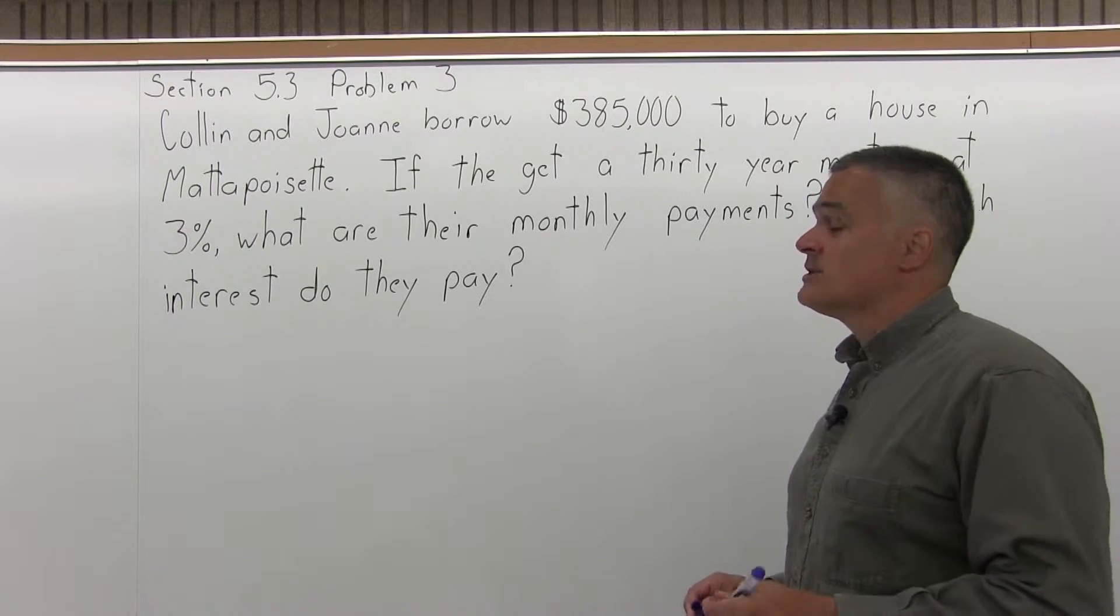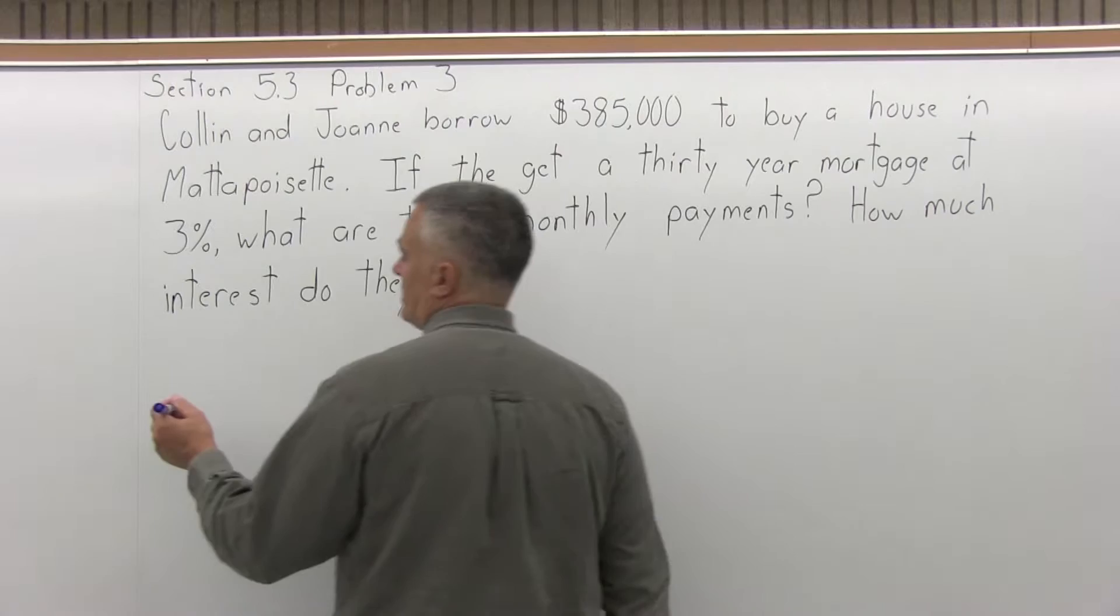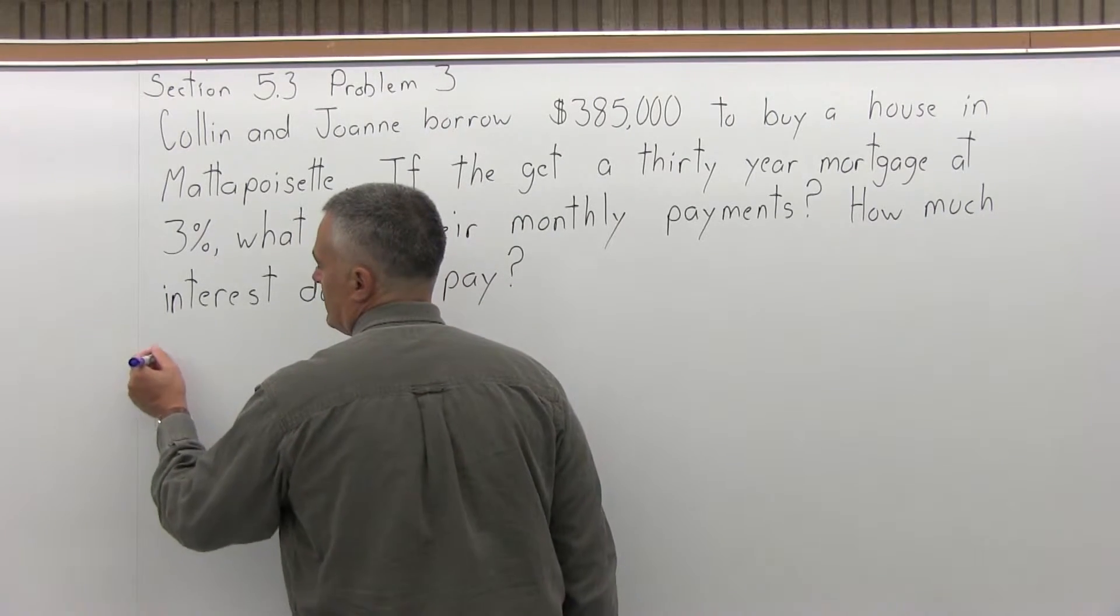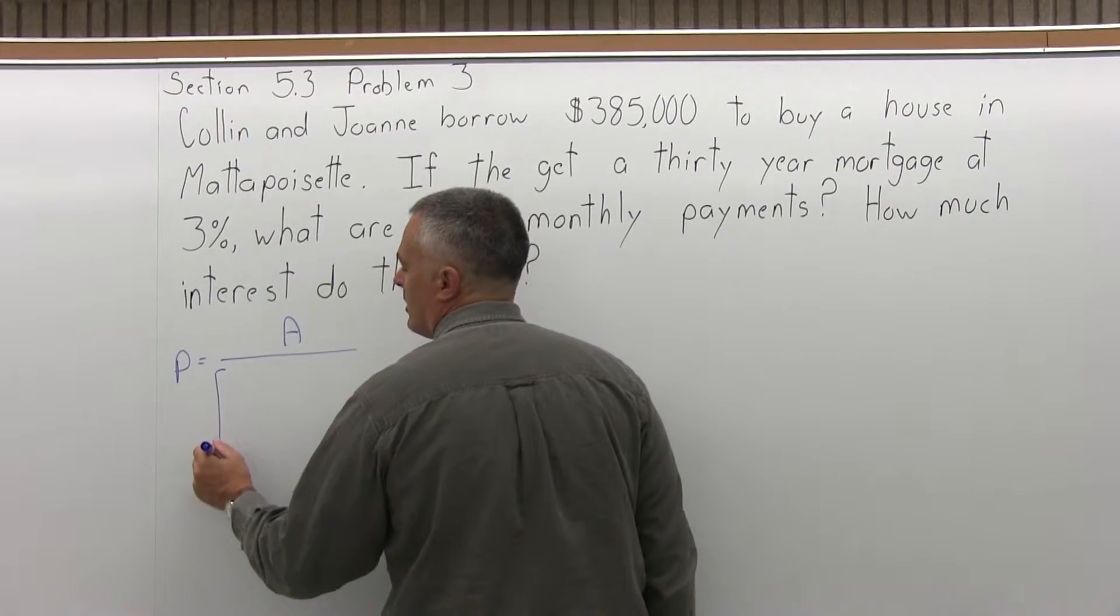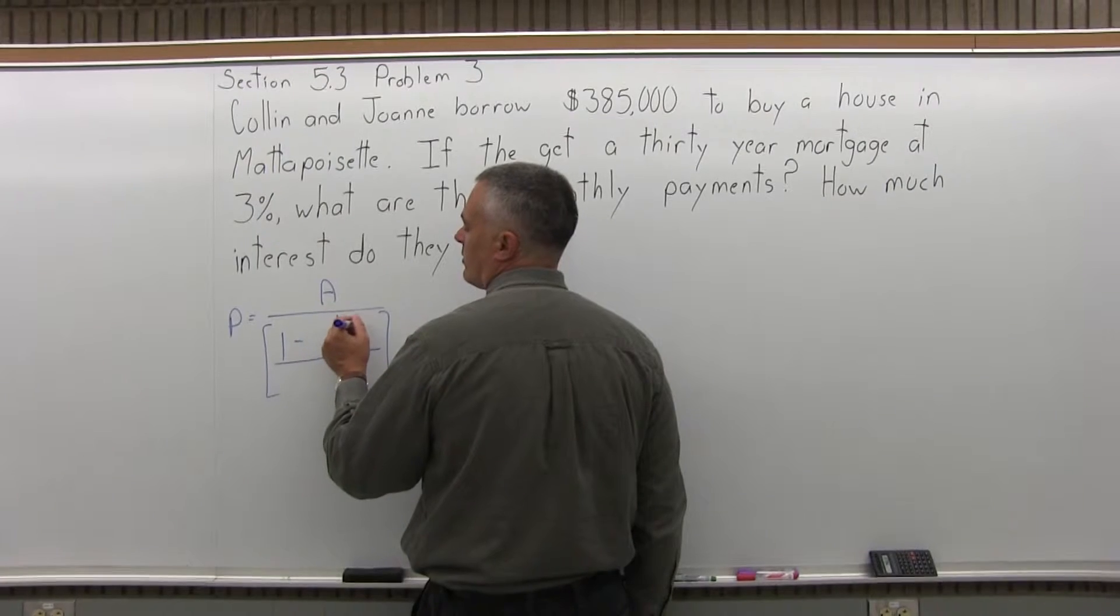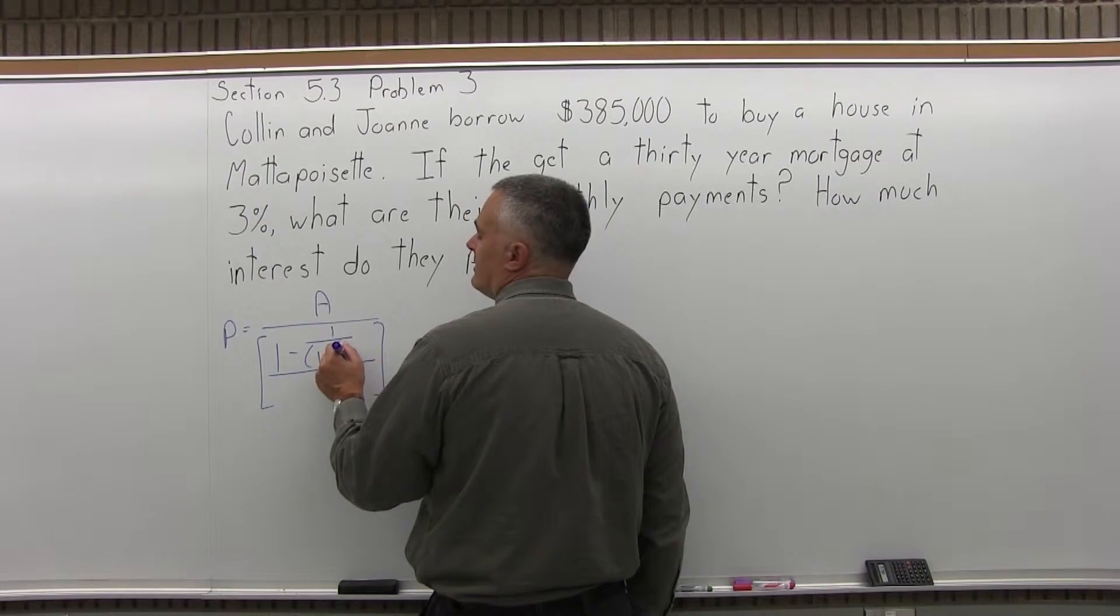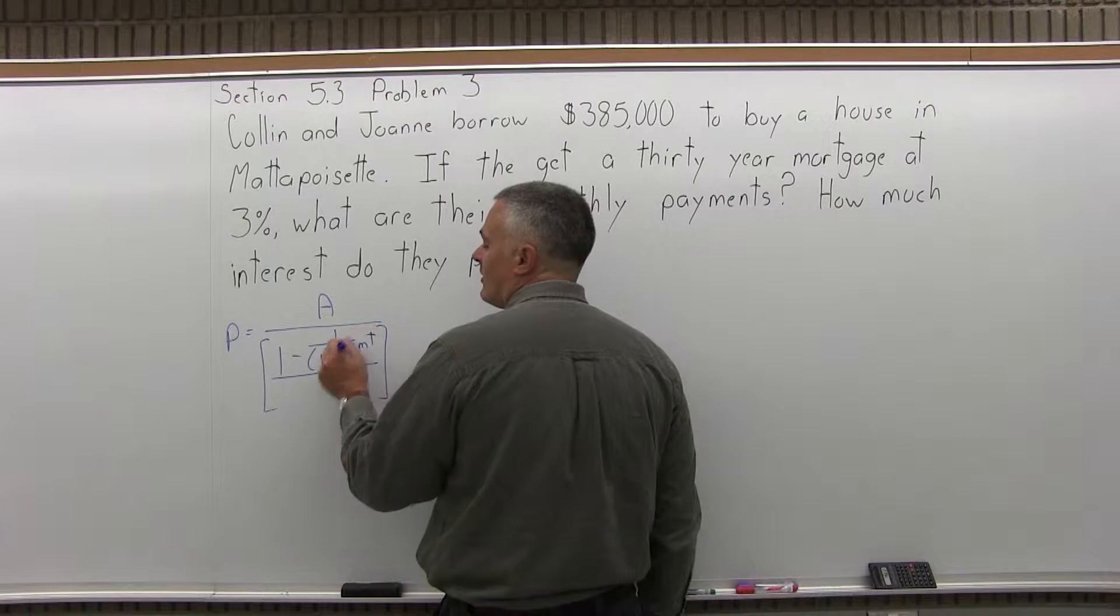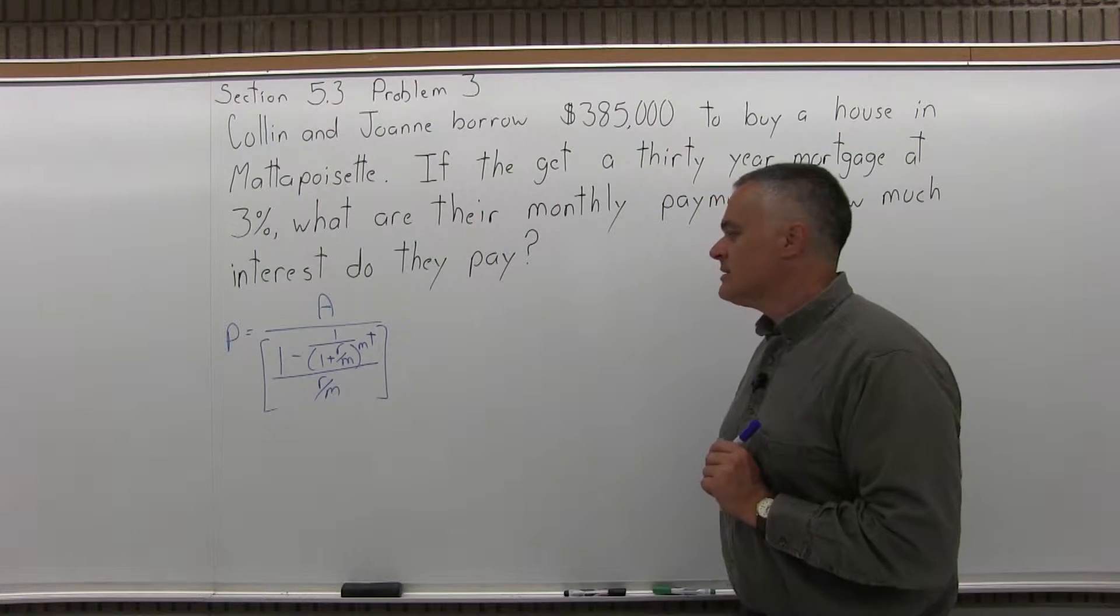This is a loan amortization question, and the formula is P, the monthly payment, equals A, the amount borrowed, over some fairly big brackets that have a numerator and a denominator. In the numerator you have 1 minus 1 over 1 plus R over M to the M times T power, and the denominator of the brackets R over M. It's a big formula.